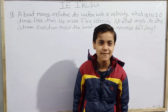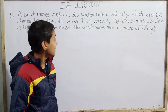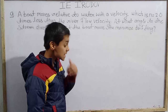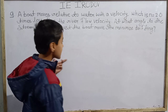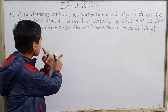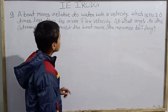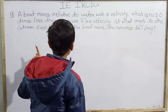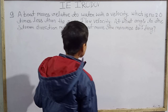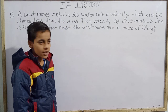Hello everyone and welcome back. We are solving problem number 9 from I.E. Irodov's textbook, problems in general physics, kinematics chapter. The question is: a boat moves relative to water with a velocity which is n equals 2.0 times less than the river flow velocity. At what angle to the stream direction must the boat move to minimize drifting?